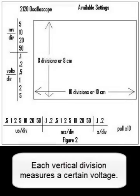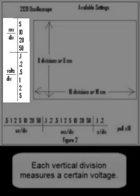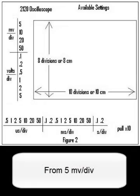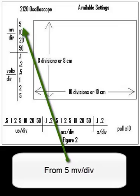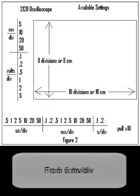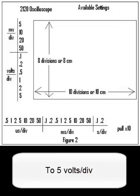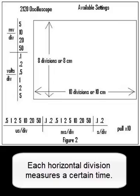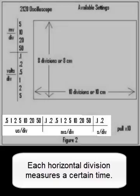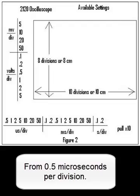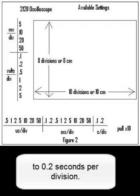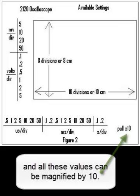Each vertical division measures a certain voltage, from 5 millivolts per division to 5 volts per division. Each horizontal division measures a certain time, from 0.5 microseconds per division to 0.2 seconds per division. And all these values can be magnified by 10.